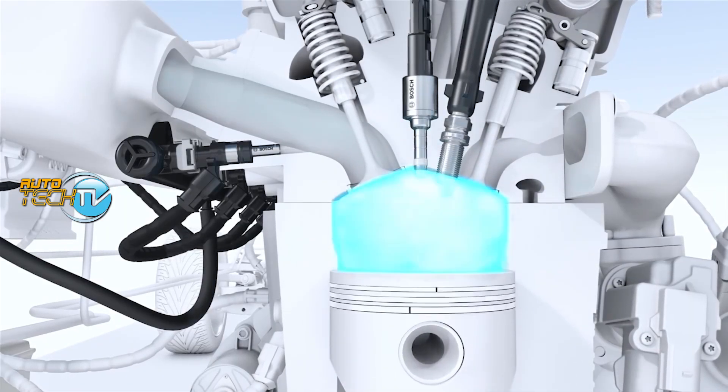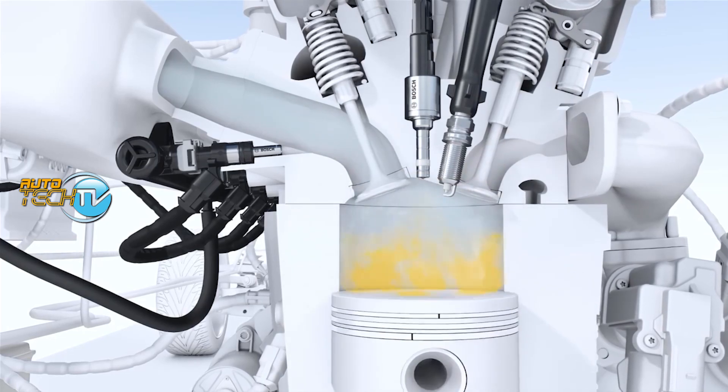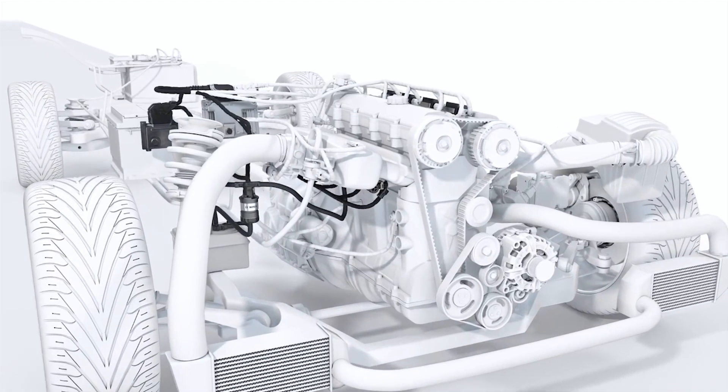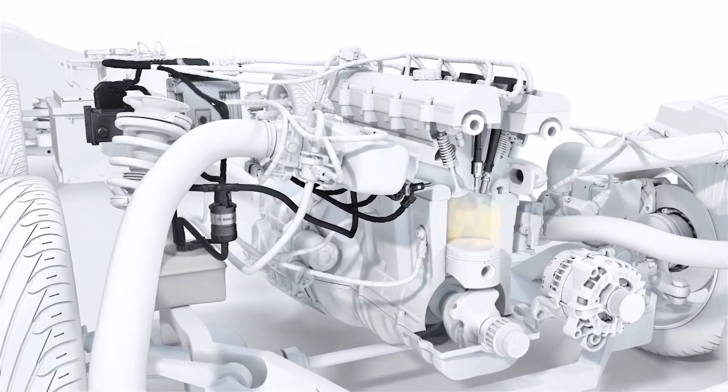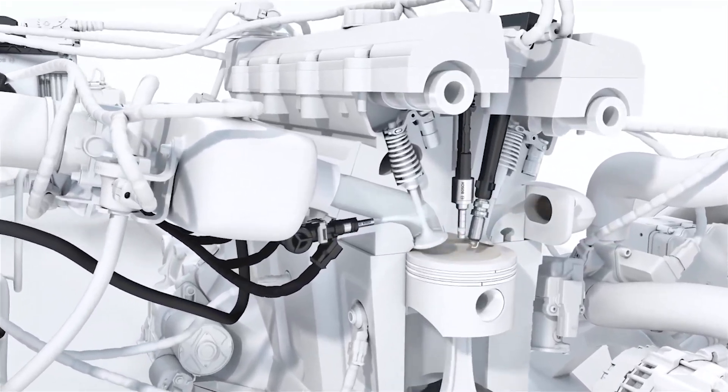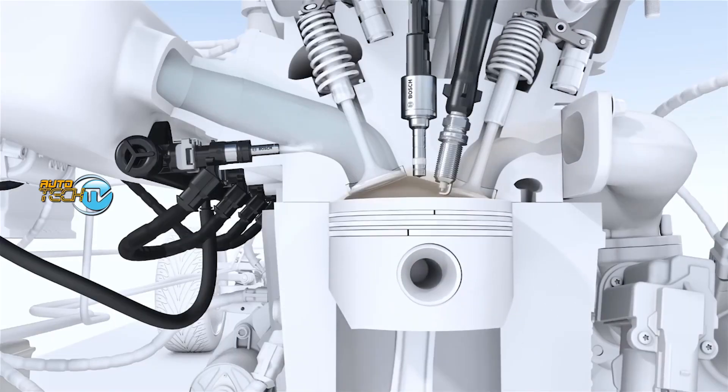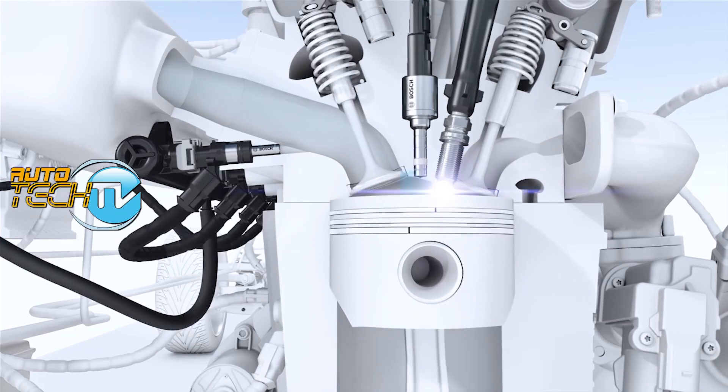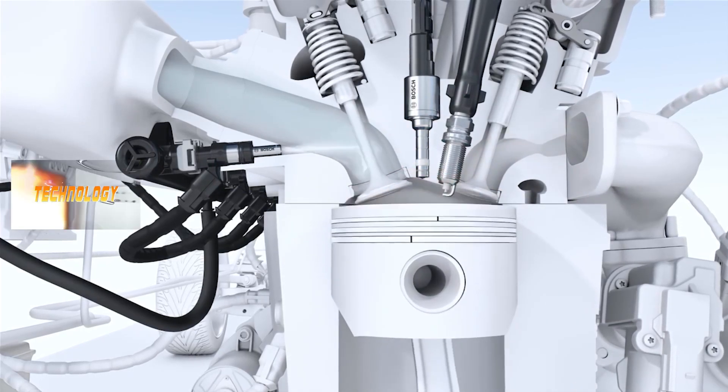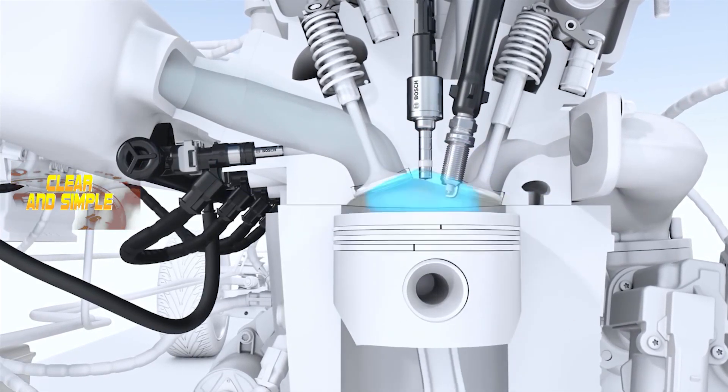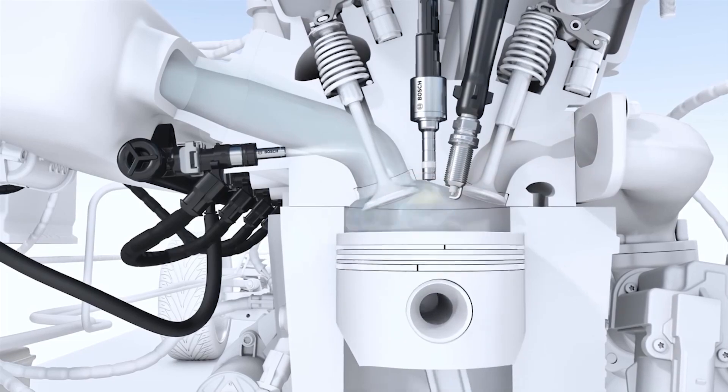We have here a detailed video of how the system works. The Bosch water injection system is an innovative technology designed to improve the performance and efficiency of internal combustion engines. The system works by injecting a fine mist of water directly into the engine's intake manifold or combustion chamber.